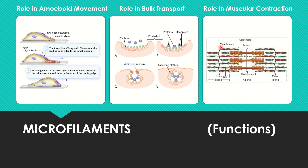Actin also helps in muscular contraction. In the sarcomere — the contractile unit of a muscle cell — myosin filaments form the A band, H zone, and M line, while actin filaments form the I band. The actin is slid by the myosin bulbous heads, called cross bridges, and the muscle is then contracted.